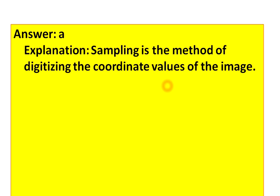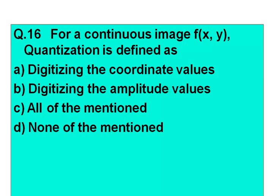Question number 16 is a homework question: For a continuous image f(x,y), quantization is defined as — Option A: digitizing the coordinate values. Option B: digitizing the amplitude values. Option C: all of the mentioned. Option D: none of the mentioned. Try to answer it; the answer will be given in the next lecture. Don't forget to share your score from today's session. Take care, bye.